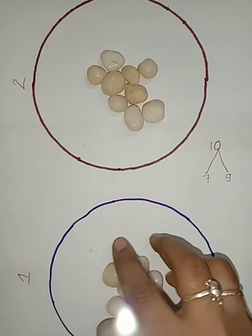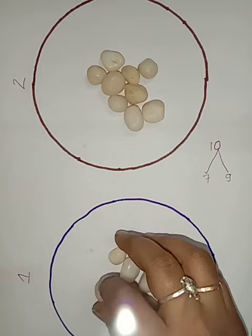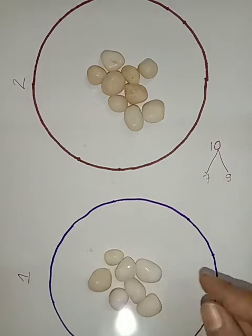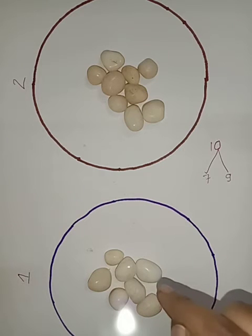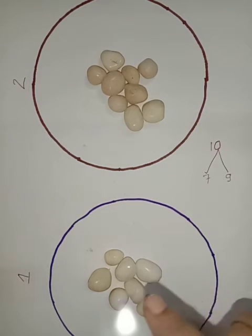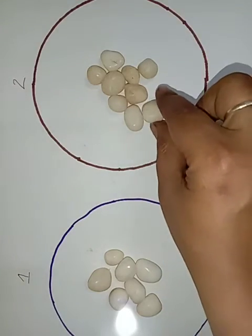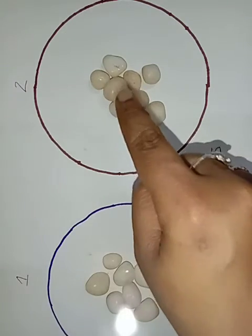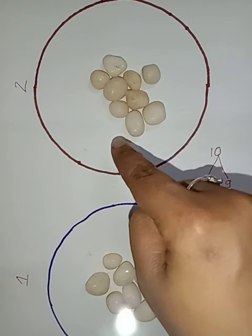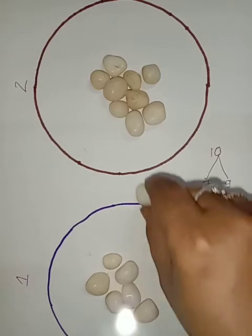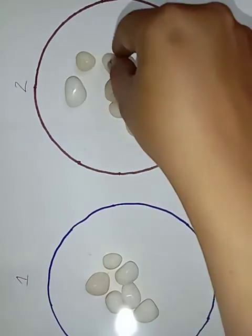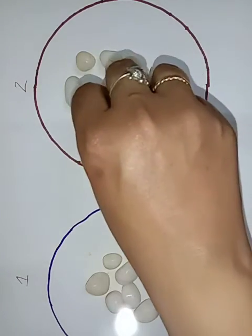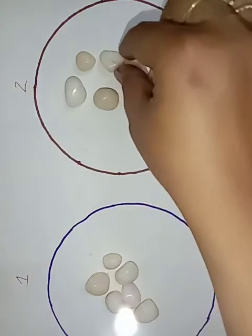So now I have to add these numbers. Before adding I have to make it easy — it should be converted to 10s and 1s. Example, now 7 is there. How many should I add to get the value 10? 3 pebbles. So those 3 pebbles I will pick from the 9 pebbles. If I want to make it 10, how many pebbles do I have to add to the 7, children? 3. So now there are 10 pebbles in circle 1. Isn't it? So there are 10 pebbles.